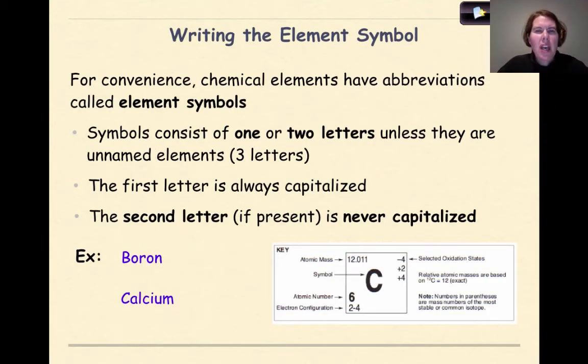The first thing we're going to look at is how to correctly write an element symbol. For convenience, chemical elements have abbreviations called element symbols, which represent all of our elements on the periodic table. Element symbols consist of either one or two letters, unless they're one of the unnamed elements, which are basically composed of three letters and you might see them at the end of your periodic tables.